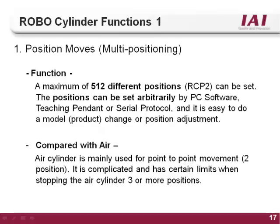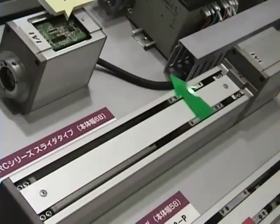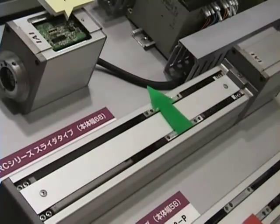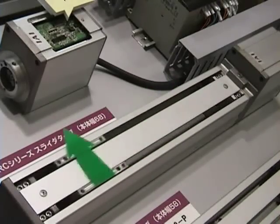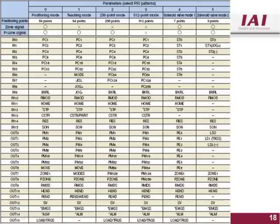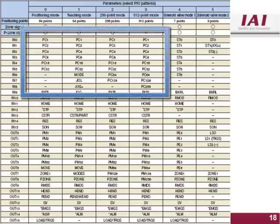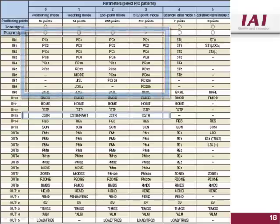The first function of the RoboCylinder controller is multi-positioning. A typical air cylinder can only move to two positions, extended and retracted. Getting more than two positions out of an air cylinder requires a lot of extra equipment. With the RoboCylinder, you can store up to 512 different positions anywhere on the stroke of the actuator. Each position is repeatable up to plus or minus 0.02 mm.